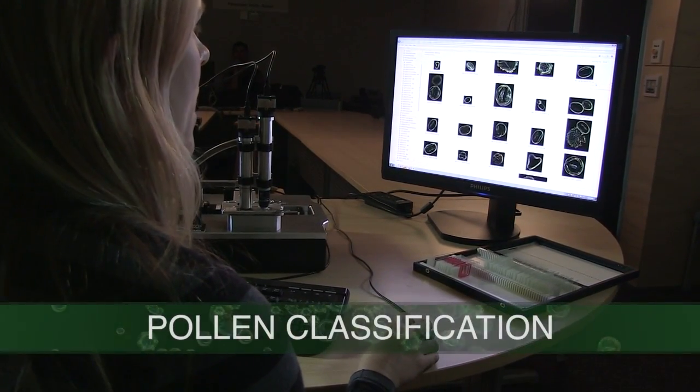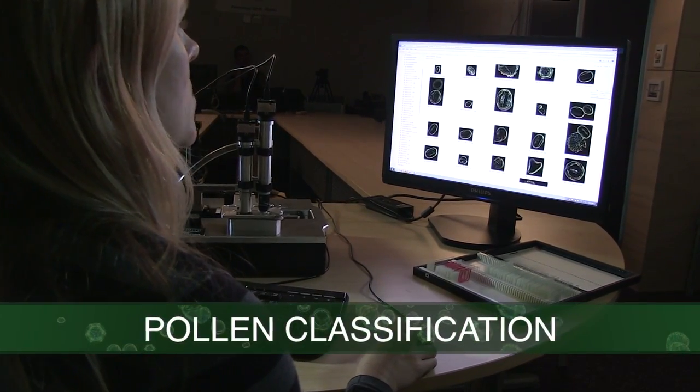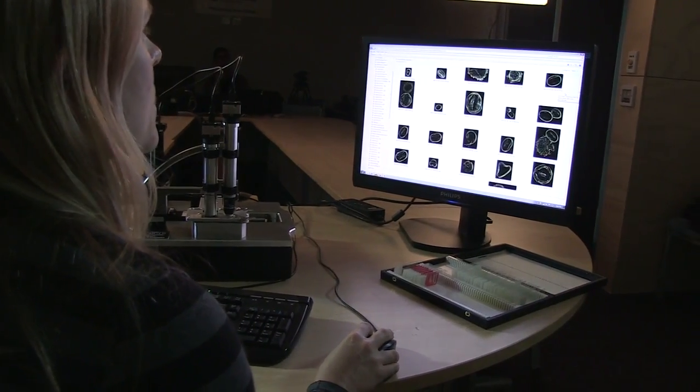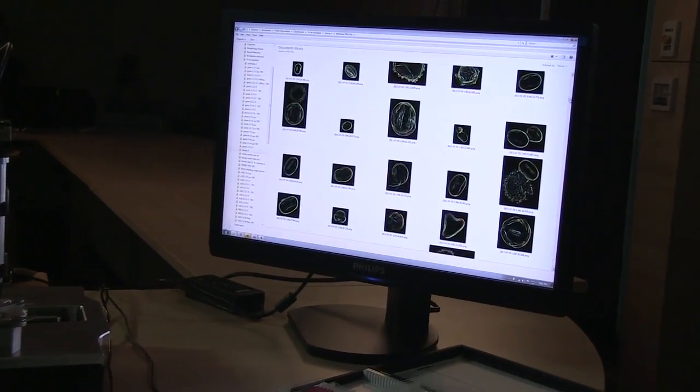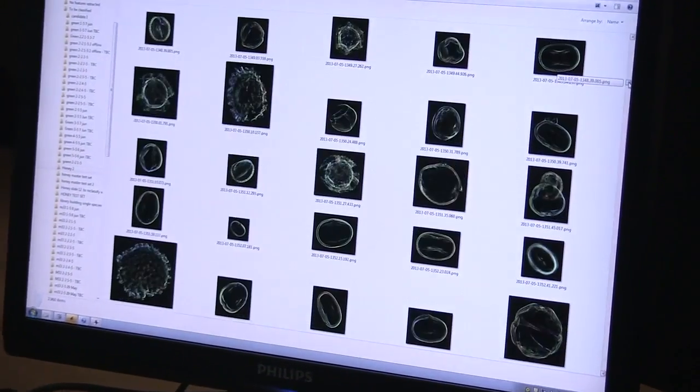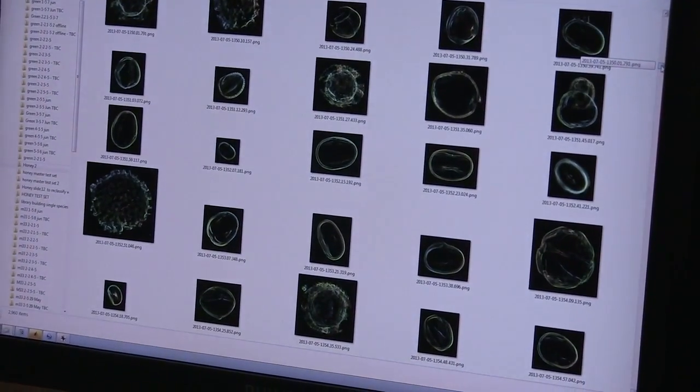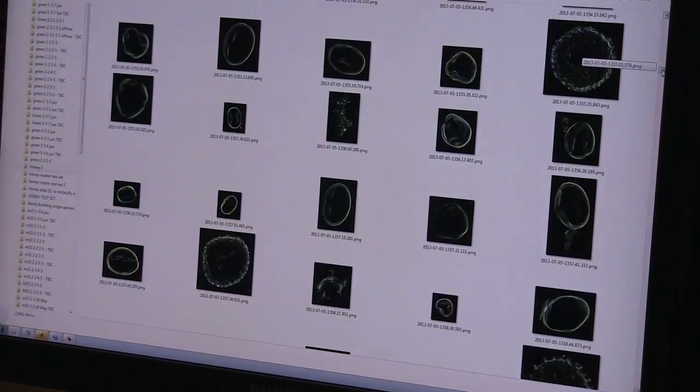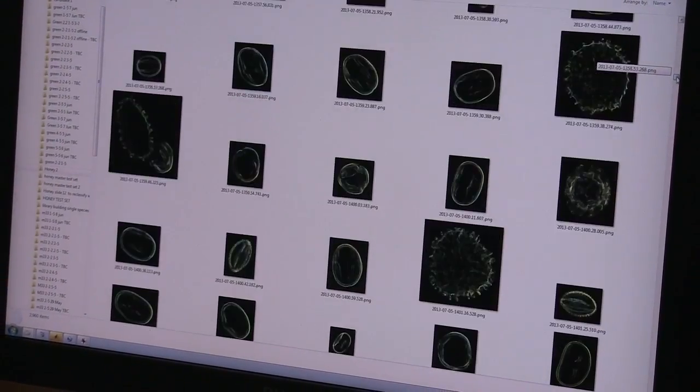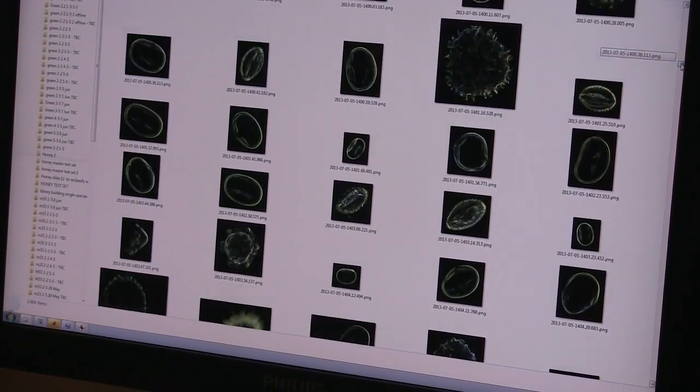So after the high resolution camera has finished imaging every pollen object that's detected on the slide, those images are then presented in a folder which is what we can see here. So these are an example of a series of images collected from a sample of honey this time. So we have many different types of pollen in this sample and here we can see those images in the one folder.